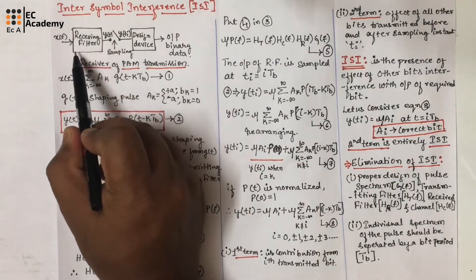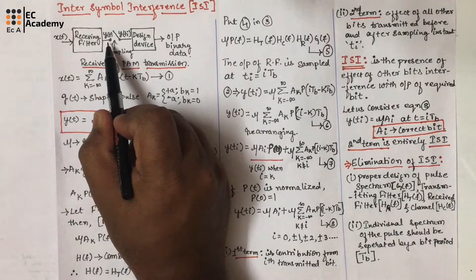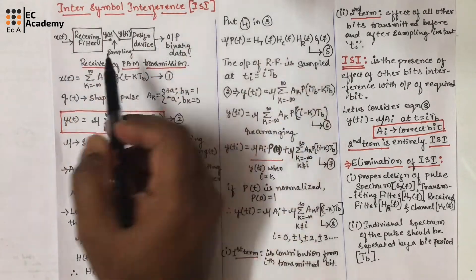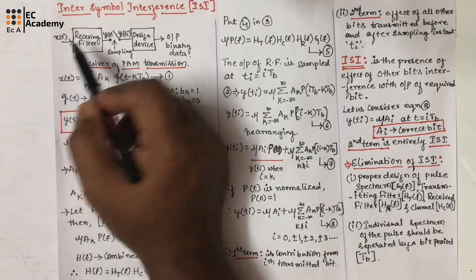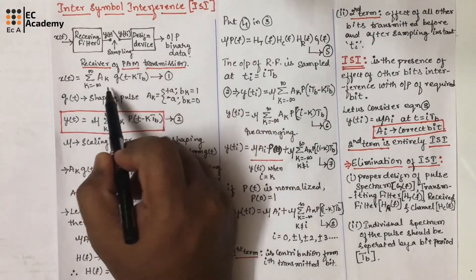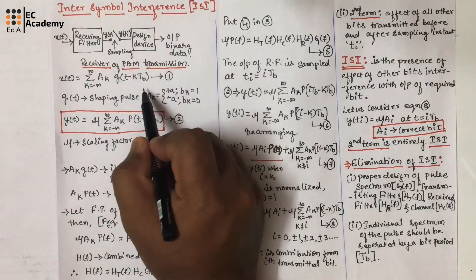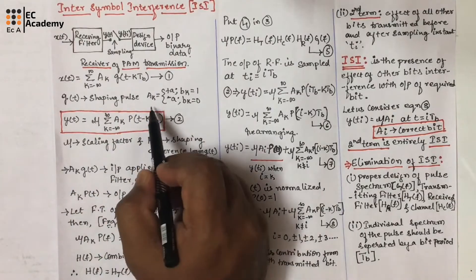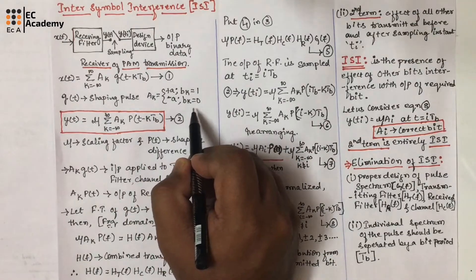In the receiving section, the first block is the receiving filter. The input signal is X(t) and Y(t) is the output signal. Y(t) will be the noisy version of X(t). We can represent X(t) as the summation from k = -∞ to ∞ of a_k · g(t − k·T_b), where k is an integer and T_b is the bit period or bit duration. Here g(t) represents the shaping pulse, and a_k is +a for input bit 1 and −a for input bit 0.